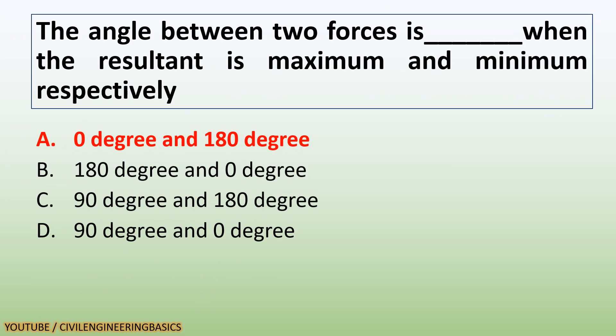The angle between two forces is 0 degrees and 180 degrees when the resultant is maximum and minimum, respectively.